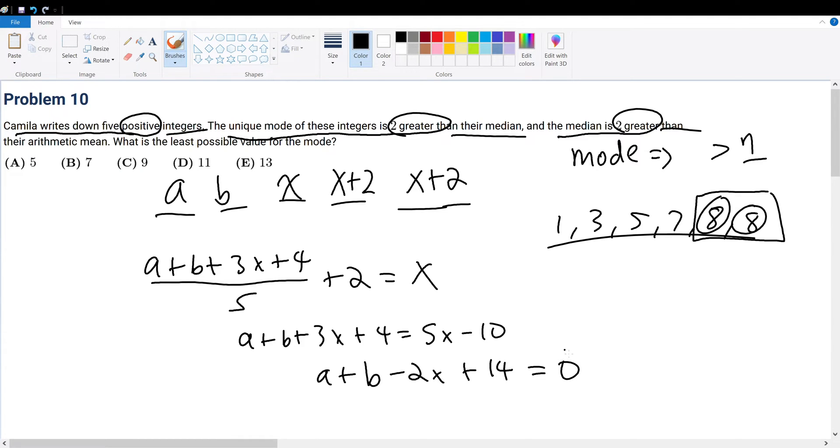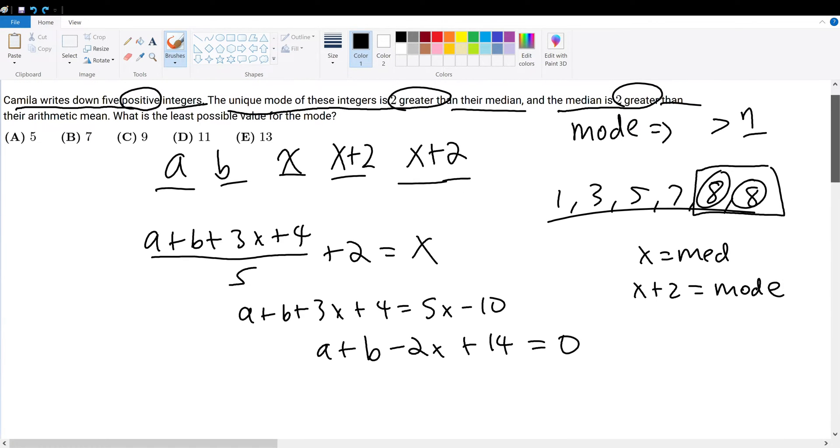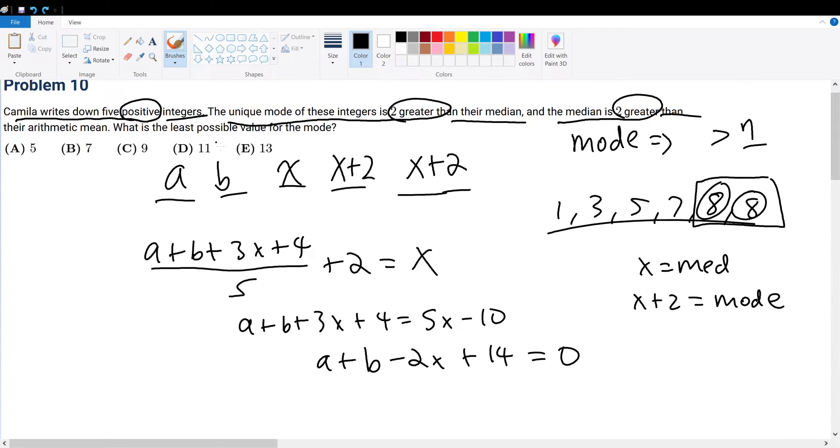Now comes the guess and check. x is equal to the median. Therefore, x plus 2 must equal the mode. And all the answer choices are given possible values of the mode. So therefore, we have possible values of the median, and we can find any case that deviates from our conditions. Therefore, we can isolate the correct answer. So starting from the left, we have 5 because we're trying to find the least possible values. So we start from the left.